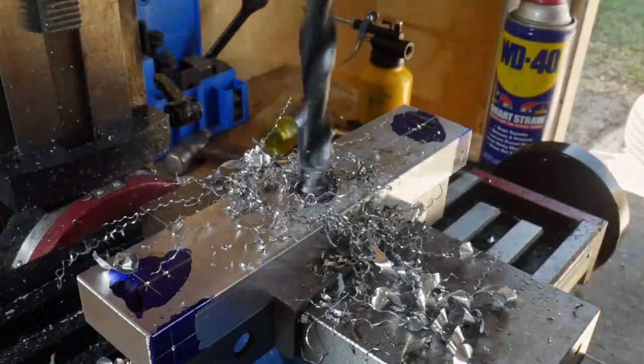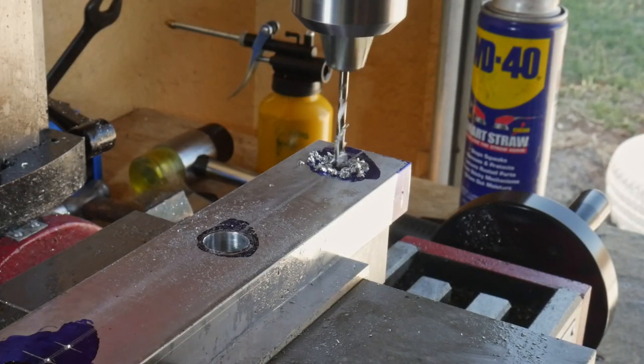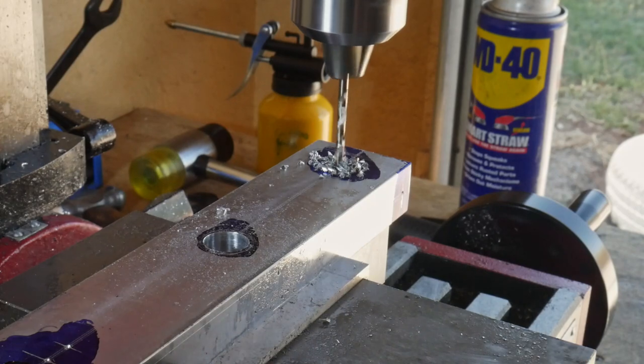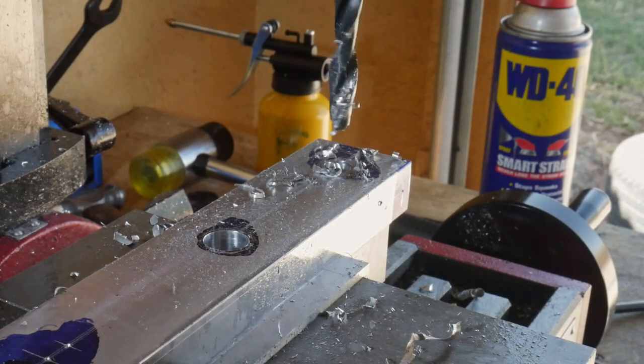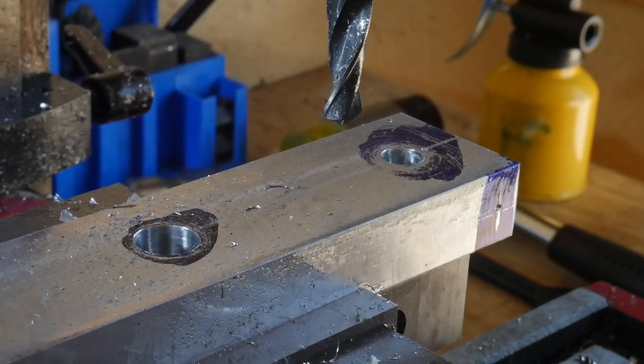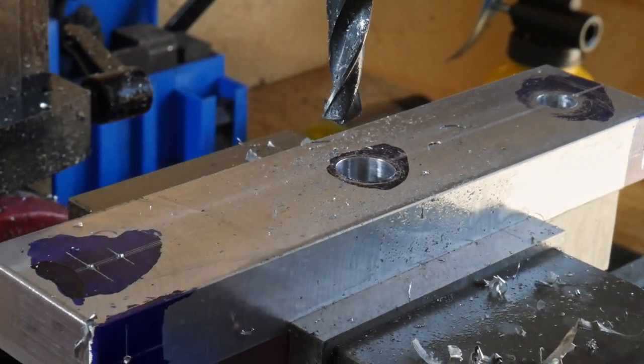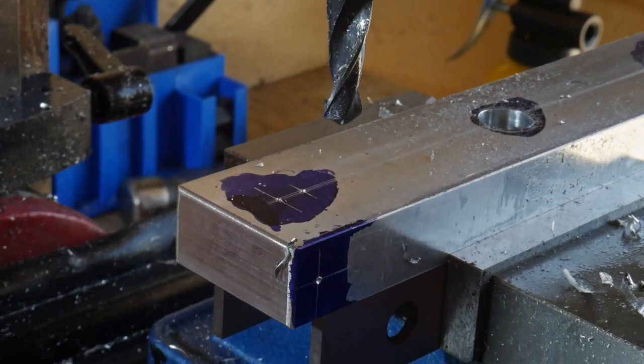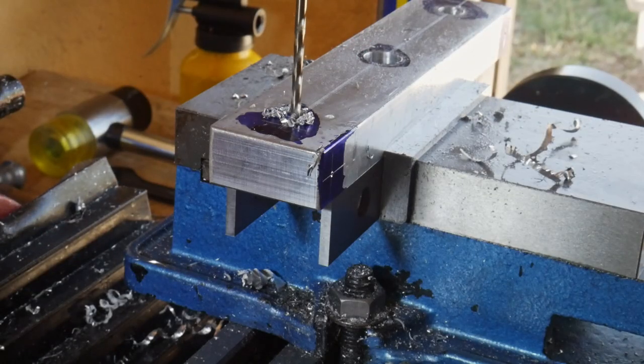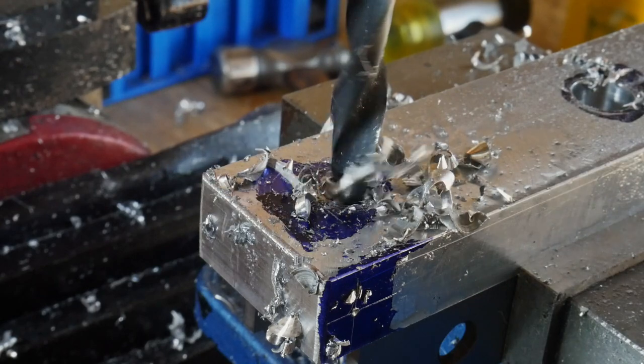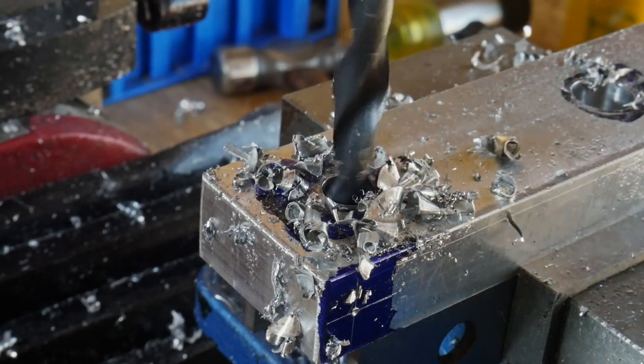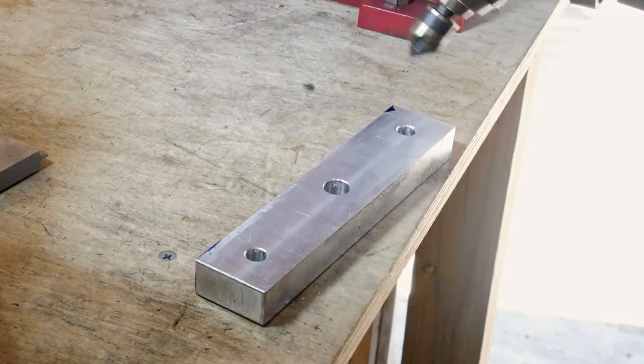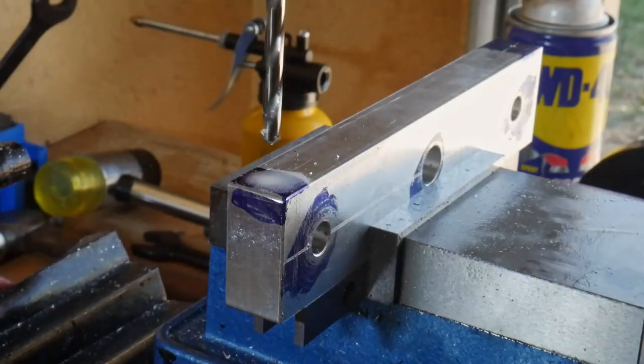The two holes for the dial indicators will be three-eighths of an inch and the center hole will be one half of an inch to accept the arbor that we will machine later. Once I drilled my first hole, I locked the y-axis so that all three holes will be in line with each other. For drilling these holes, I used a small pilot, in this case an eighth of an inch pilot hole, and then a very slow speed on my mill with the larger three-eighths and half of an inch drill bits.